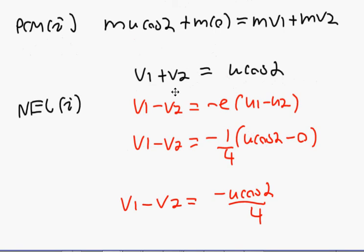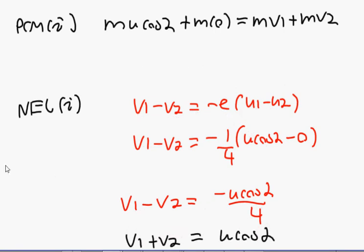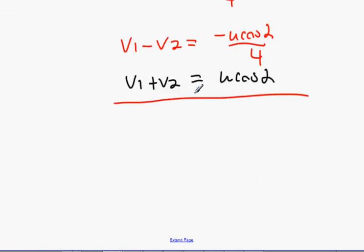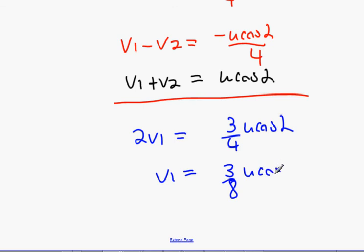Now we're going to add them together and figure out what is V1. So we're going to get 2V1. U cos alpha minus a quarter U cos alpha is going to be three-quarters U cos alpha. Therefore V1 is going to be three-eighths U cos alpha.